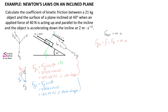Substituting values: the component of gravity acting down the slope is 132.29 N, the frictional force is unknown, the applied force is 20 Newtons, the mass is 21 kilograms, and the acceleration is 2 meters per second squared. Solving this equation gives us the unknown frictional force of 70.29 Newtons.